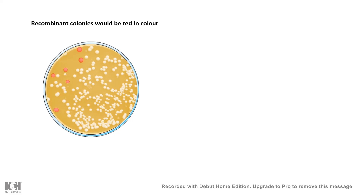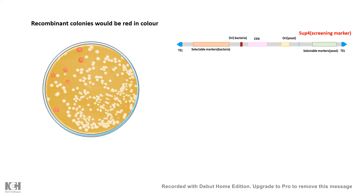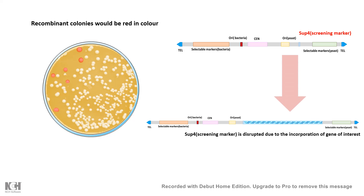Transformation via electroporation is the preferred method. The yeast is then grown in the form of colonies, and the next day you would find that recombinant colonies are red in color. This is because the YAC was initially designed with a SUP4 gene as a screenable marker in its multiple cloning site. Once you clone your gene of interest into the multiple cloning site, it disrupts the SUP4 gene. The SUP4 suppressor can no longer suppress the red color of the yeast colonies, so all recombinant colonies appear red.